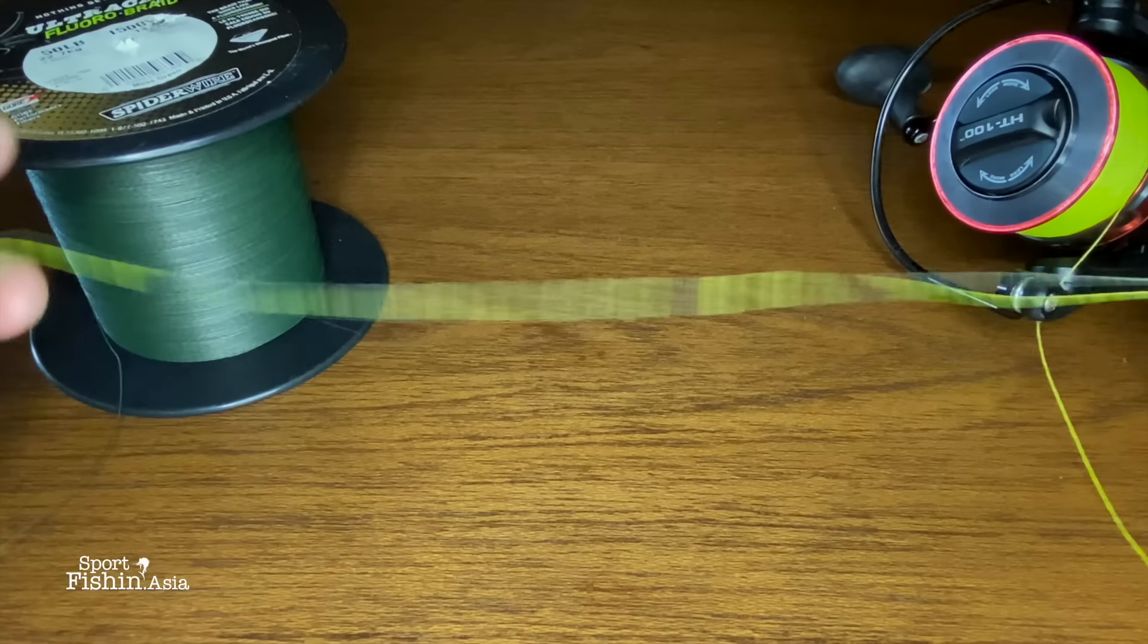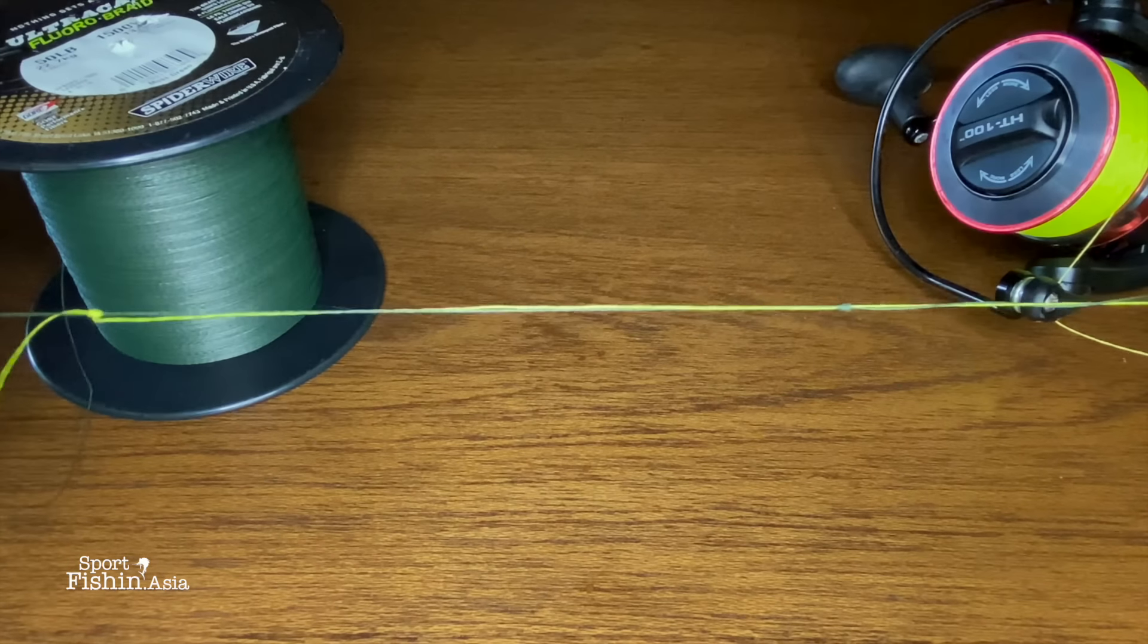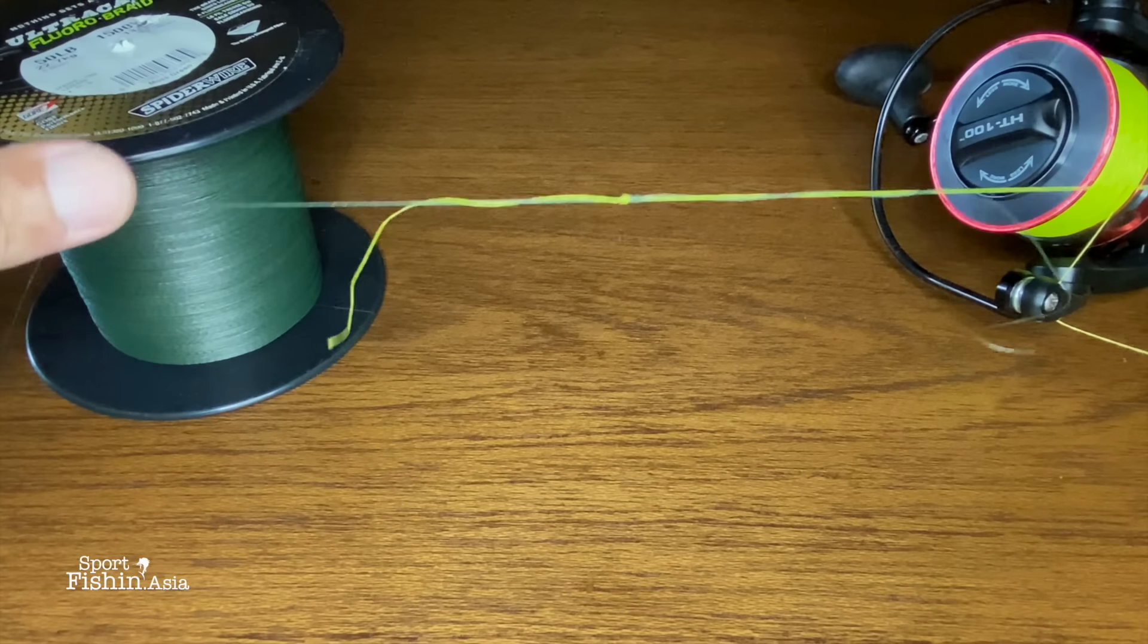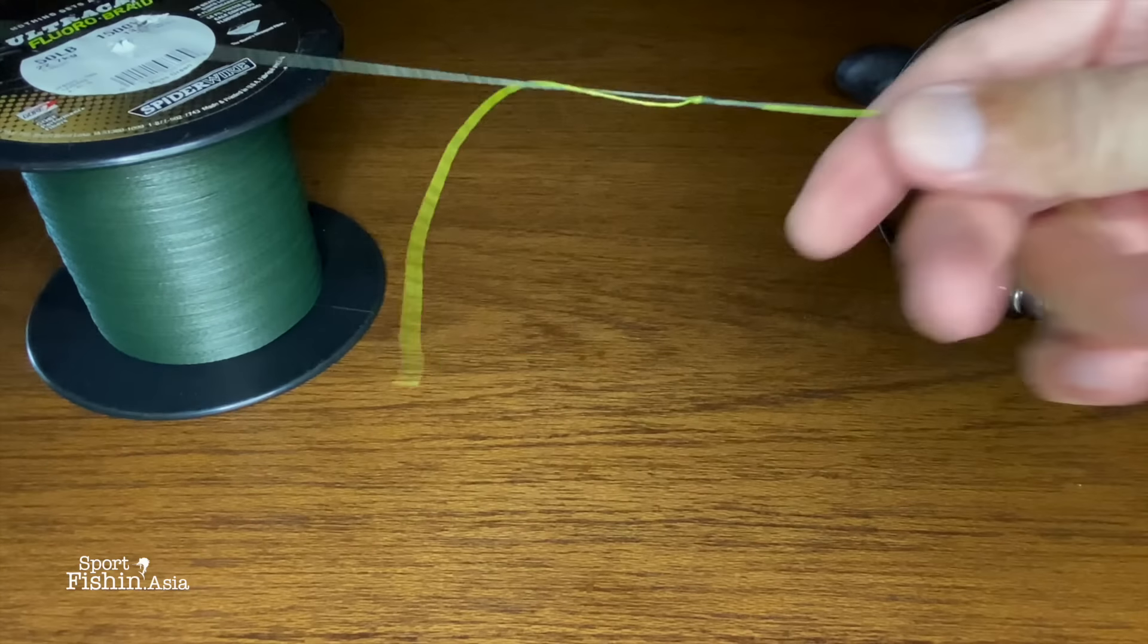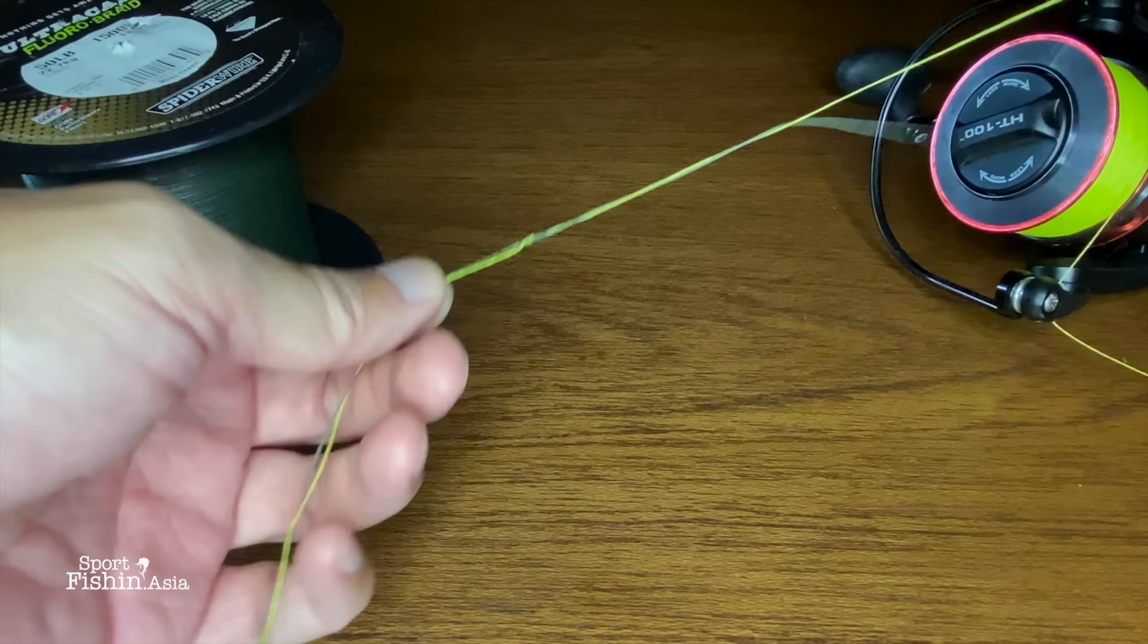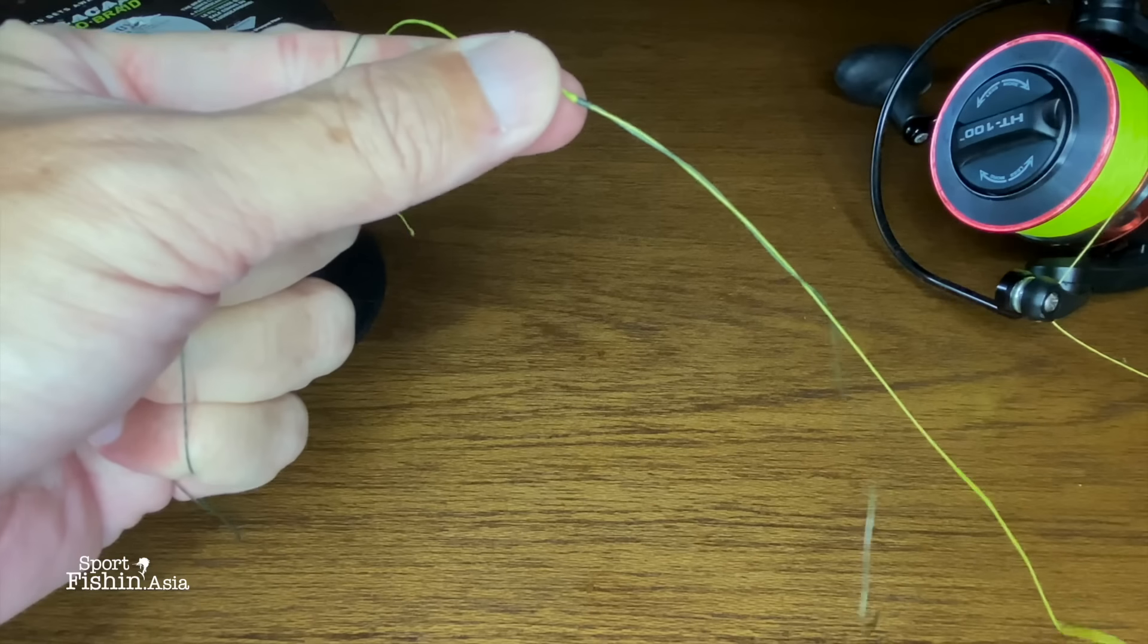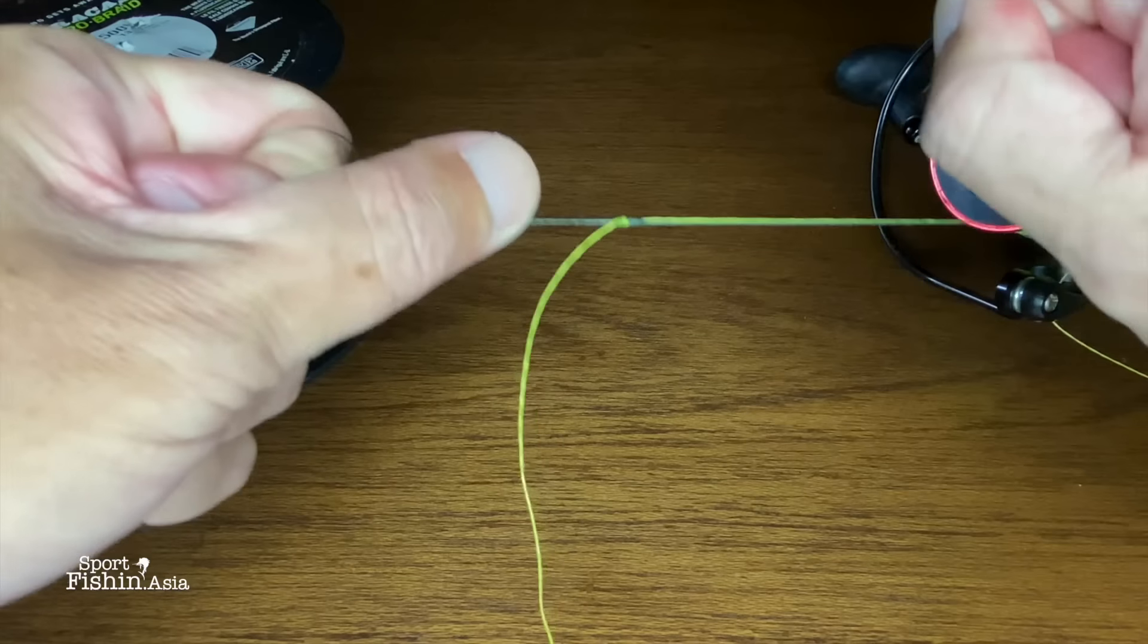Once you pull both knots tight, pull both main lines to get them together. Both the knots are actually jammed onto each other, so pull tight, and then pull the tag ends tight.